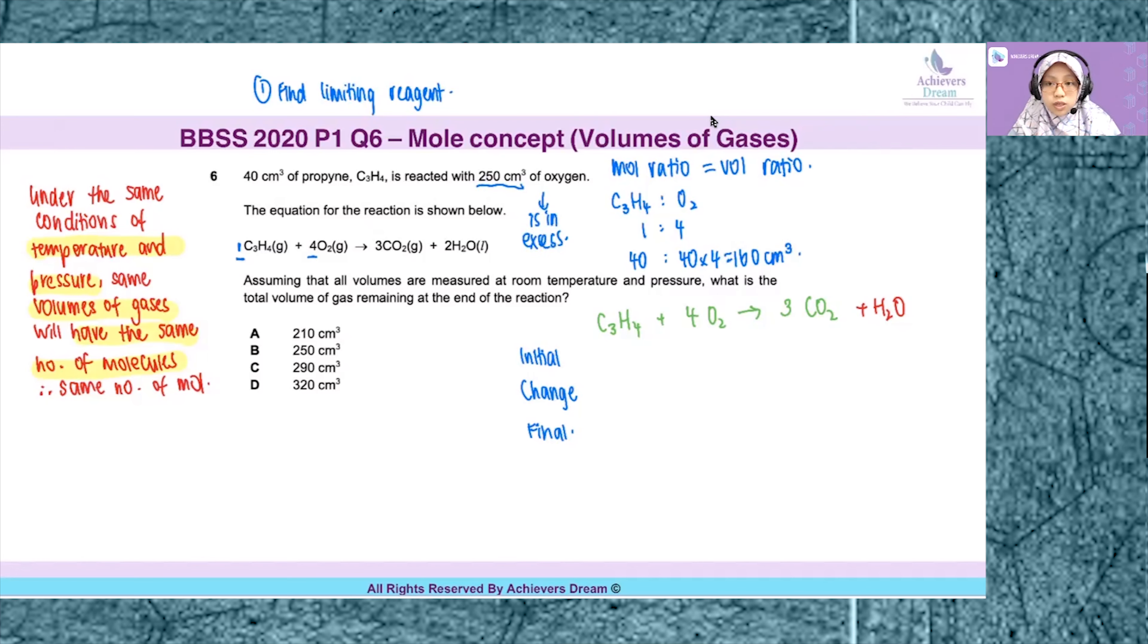Now let me write the values in the table below. Initial means the volume of gases present before the reaction starts. For propyne, I have 40 cm³. For oxygen, I have 250 cm³. And my product carbon dioxide is zero because the reaction hasn't started.